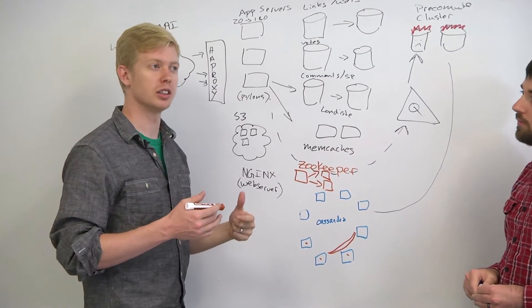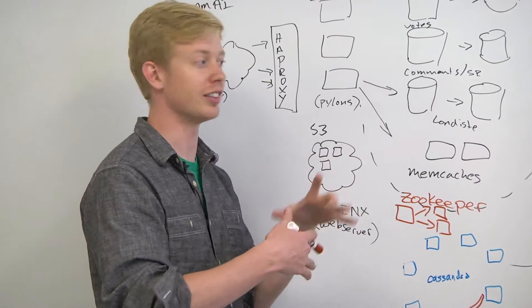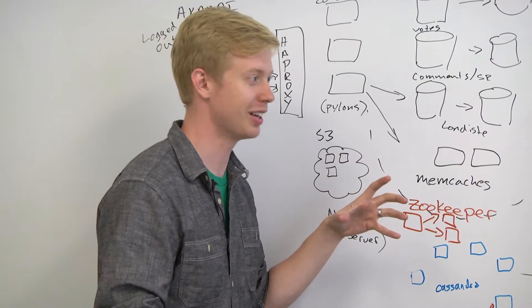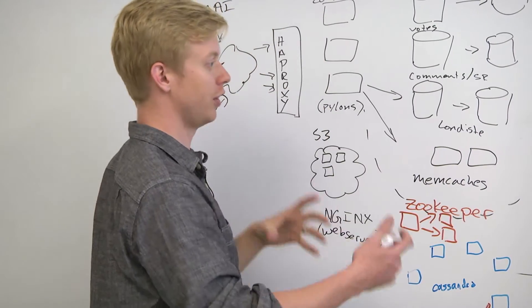If you're deploying a new configuration, once you have more than a couple app servers, all of a sudden, deploys take time, right, things don't happen at the same time. And so all of a sudden, you've got half your app servers with a different configuration,